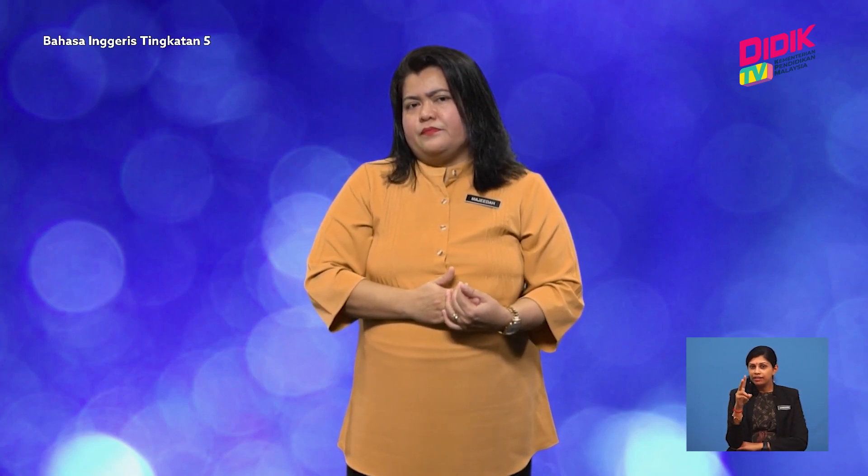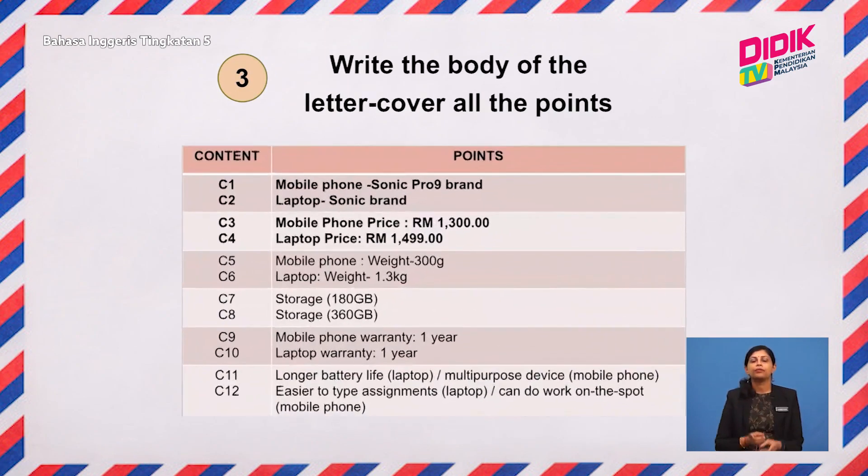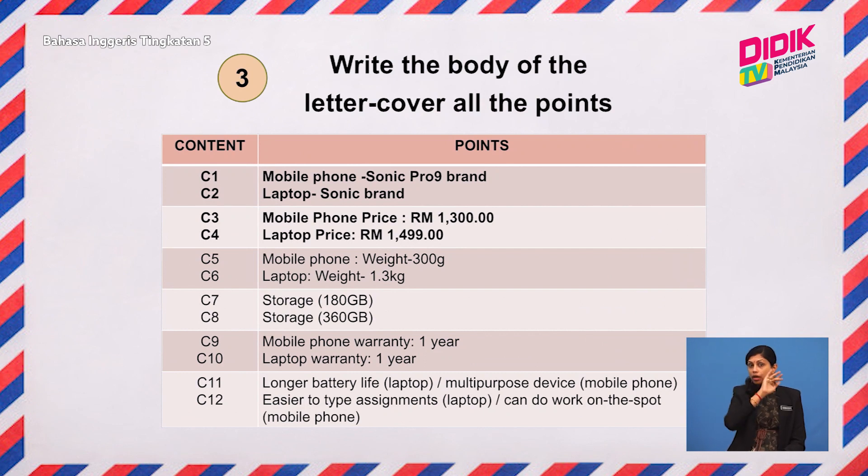Typically, there are 12 identified content points in this question. During the exam, underline them and label C1 to C12 — this is a very useful tip. They carry about 12 marks. Also, avoid stringing your points in one sentence. Try writing the points in separate sentences. In this question, you are required to compare two electrical devices, and the language expected from you will be comparative adjectives.